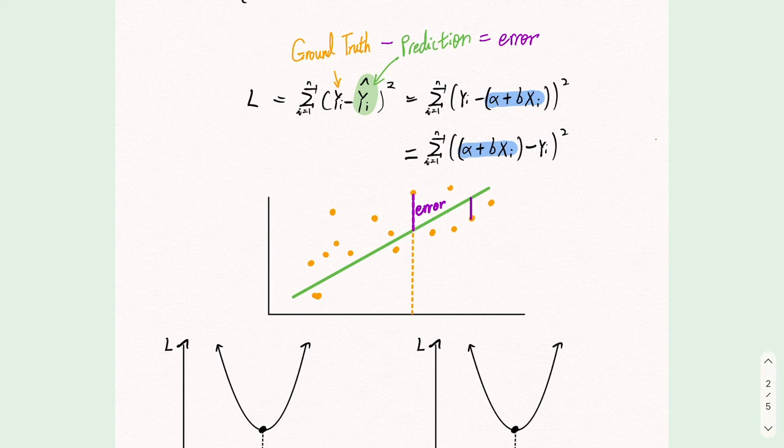We now need to find the line that gave us the minimum loss. In other words, we need to find the a star and b star, which is the intercept and slope of our best fitting line.